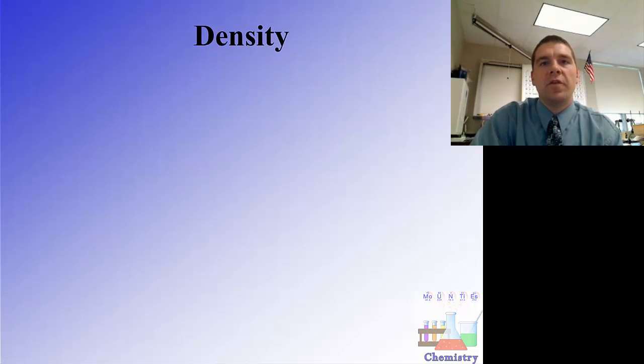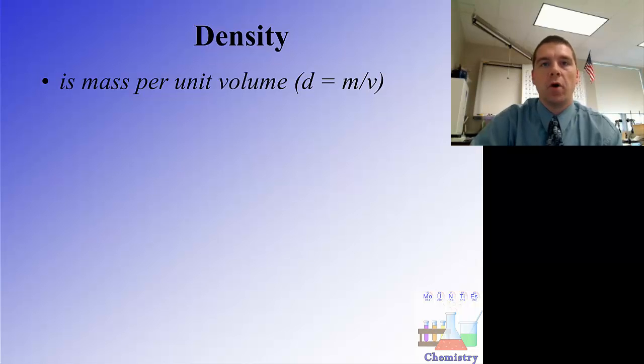One way that we can describe different substances is by the physical property of their density. Density is a measurement of how compact the particles are in a given volume. Another way of defining that is the mass per unit volume.